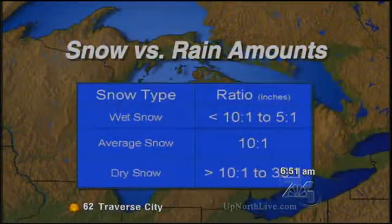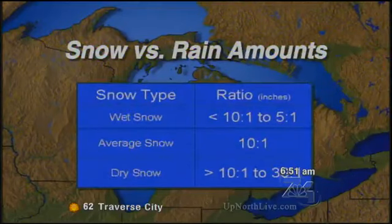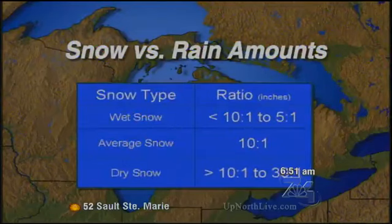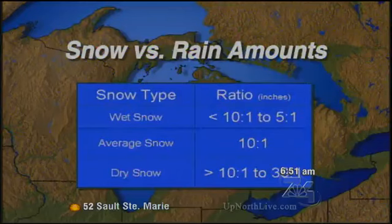Here's an idea of snow versus rain amounts when you get close to that freezing mark line. Average snowfall for a typical area: if you have one inch of rainfall you can see 10 inches of snow. Whether it's dry snow or wet snow you can see different amounts. So a lot goes into it.